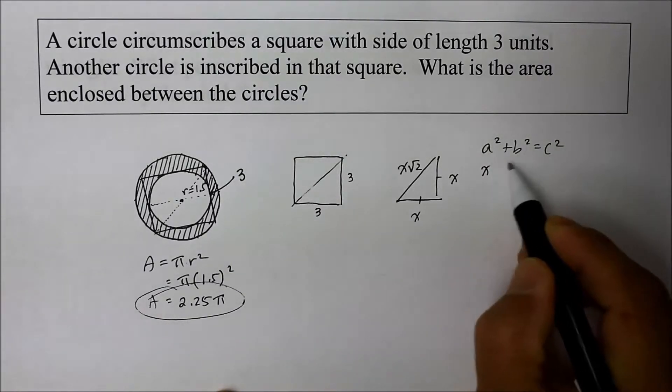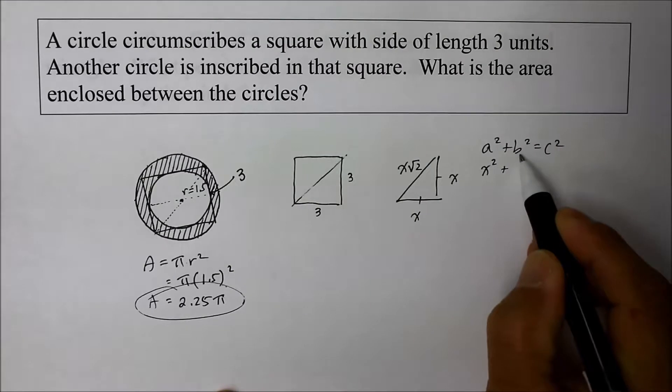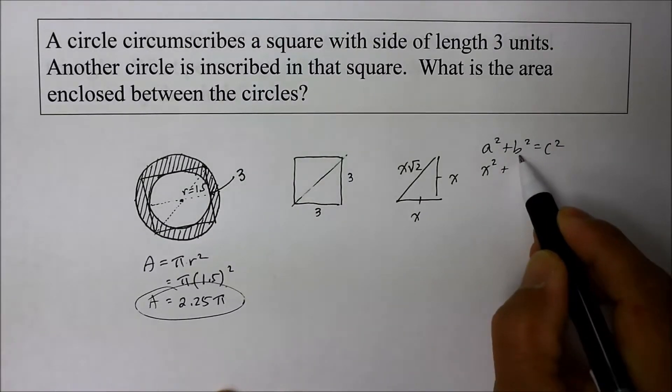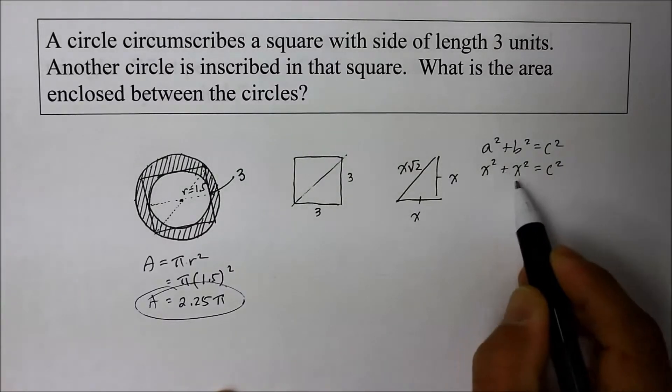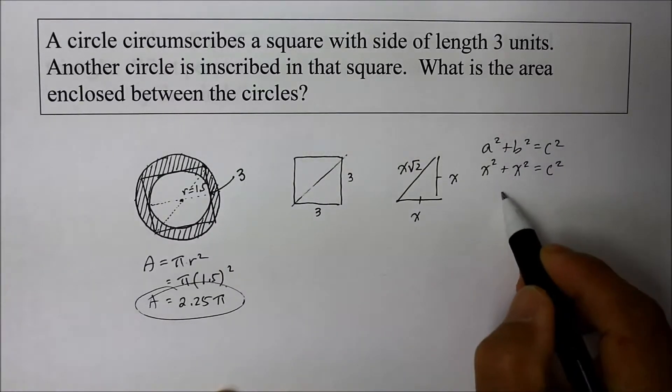Let x represent the a, and since b is congruent, let b also be represented by an x, and we just need to find the c. x squared plus x squared, that's two of them, so that's 2x squared.